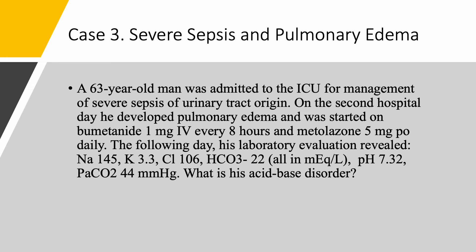Case number three — a patient with severe sepsis and pulmonary edema. This is a 63-year-old man admitted to the intensive care unit for management of severe sepsis of urinary tract origin. On the second hospital day, he was in pulmonary edema and was started on bumetanide, a loop diuretic, 1 mg intravenously every 8 hours, and metolazone 5 mg PO daily. The next day: sodium 145, potassium low at 3.3, chloride 106, bicarbonate 22. pH is 7.32 — acidemia with low bicarb. Do we have metabolic acidosis, or a mixed acid-base disorder? The PaCO2 is 44. What is the acid-base disorder? Do we have a simple acid-base disorder or more? Let's look into this.